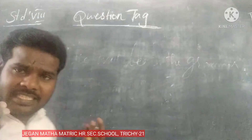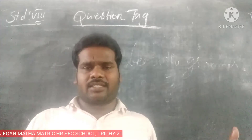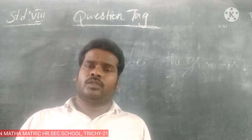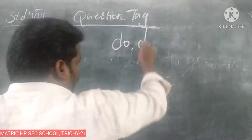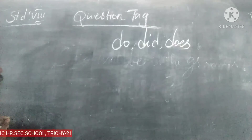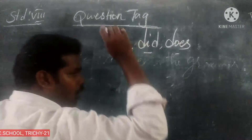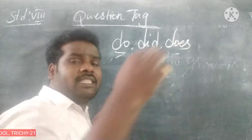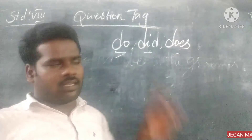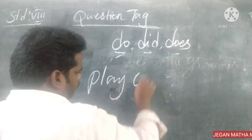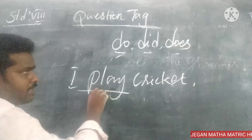Without auxiliary verbs: if we have an auxiliary verb we use the same auxiliary verb, positive or negative. Without an auxiliary verb, if we have a main verb, we use the do-form: 'do', 'did', or 'does'. If we have a present main verb, use 'do'. If we have a past tense main verb, use 'did'. If the verb has an 's' — third person singular — use 'does'. For example, simple present: 'and play cricket' — there is no auxiliary verb, so we use 'do'.